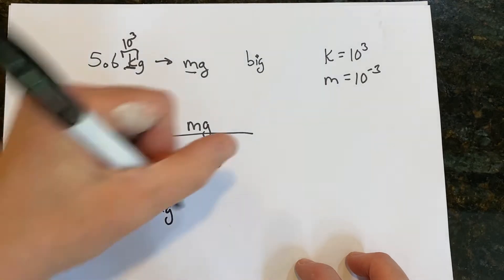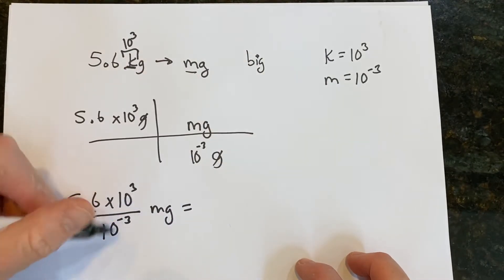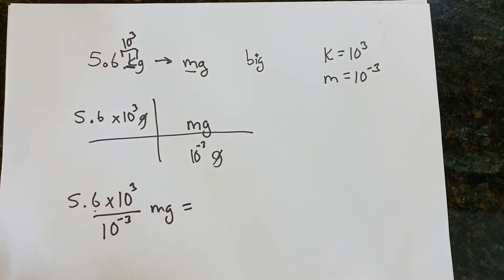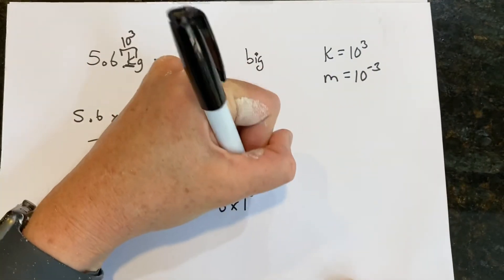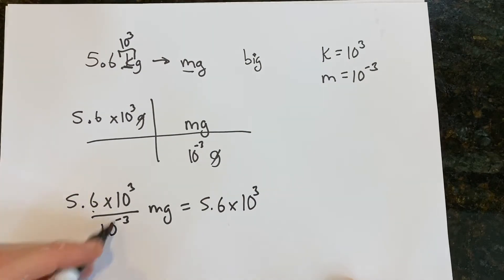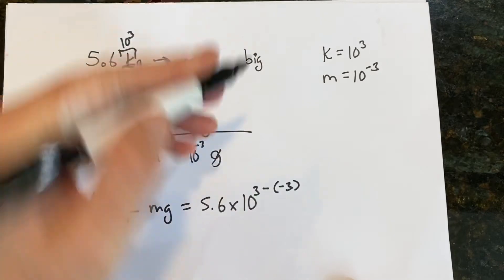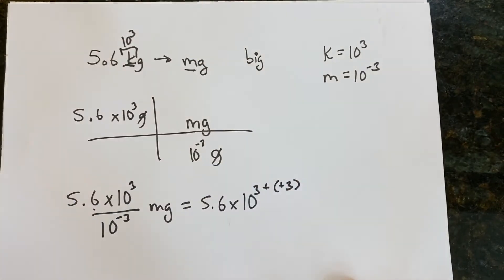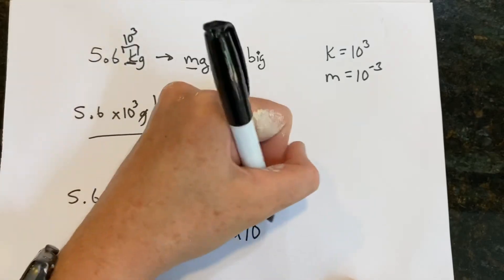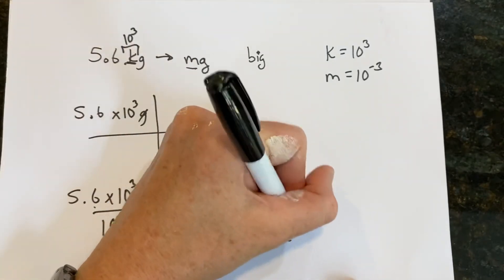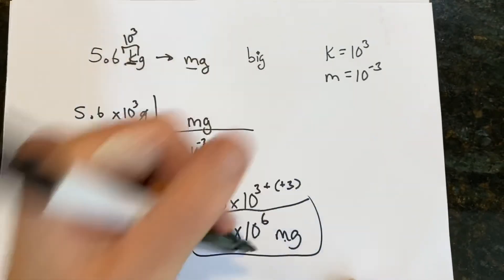Anytime we have exponent divided by an exponent, you use subtraction. If you have an exponent times an exponent, you multiply. So here we have 5.6 times 10 to the third. And remember, we're dividing here, so we're going to subtract minus a negative three. If you subtract negative, that's the same thing as adding a positive. And that's how we get 5.6 times 10 to the sixth milligrams as our final answer.